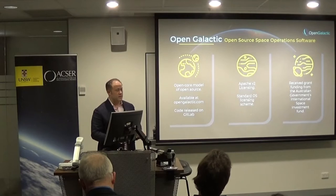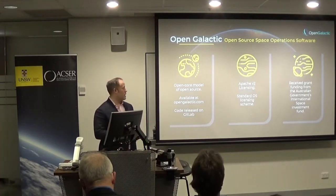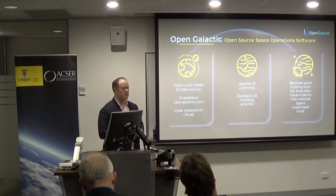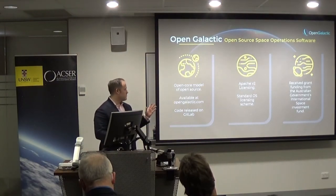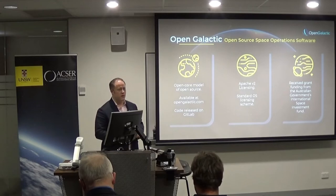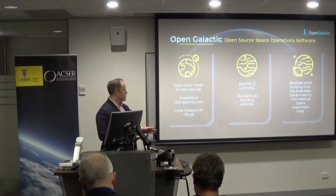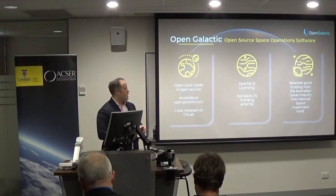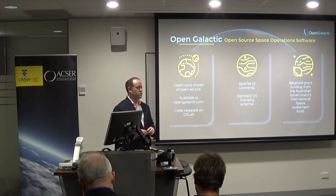So, OpenGalactic. It's the open source space operation software. We went with an open core model where we have the main core which we've called Scepter, which is our command and control software. We've open sourced that — you can go to opengalactic.com. We've released all the code, gone with Apache 2.0 licensing, and there are a couple of MIT licenses as well. Standard open source licensing, nothing unusual. This was funded by the Australian Government's International Space Investment Fund as part of the open source space operations project, which became OpenGalactic.